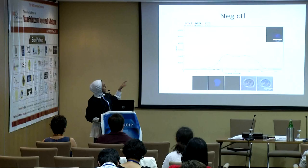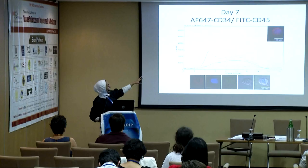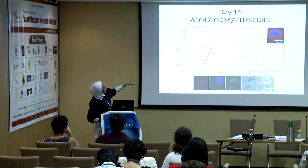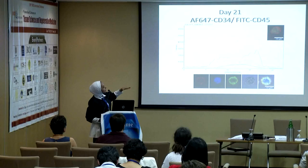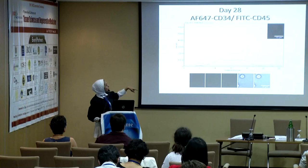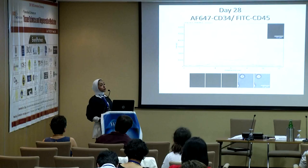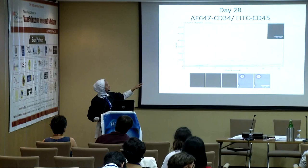The negative control is shown, then day seven showing some signal of CD34, followed by day 14 where CD34 peaked, then a decrease by day 21 and almost negative by day 28. Day 28 also showed negative for DAPI, the nuclear marker — indicating cells started to lose the nucleus, which is the main feature of erythrocytes, and began to take the typical discoid shape of erythrocytes.